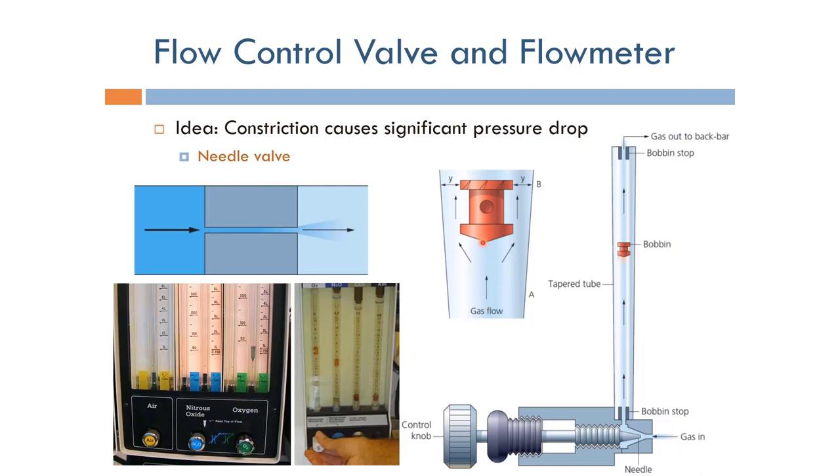We can have different markings here on this tapered tube so that we can know from the location of the bobbin the flow rate value. We adjust the one responsible for the nitrous oxide and the one responsible for oxygen, and we can actually adjust the mixing ratio between the two.